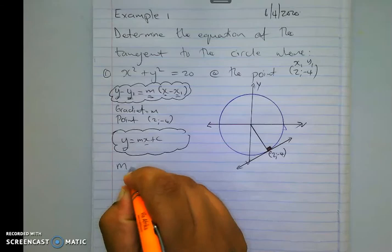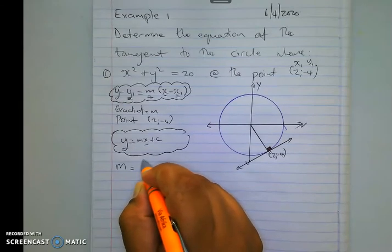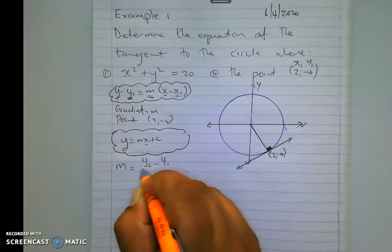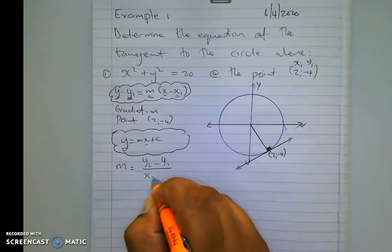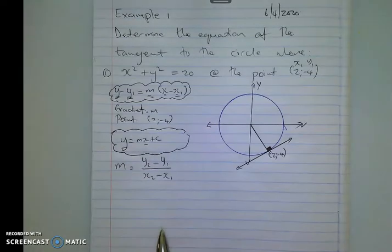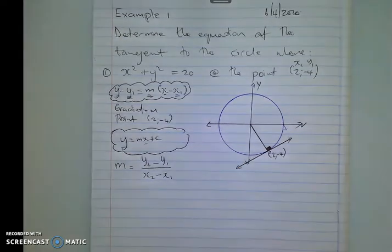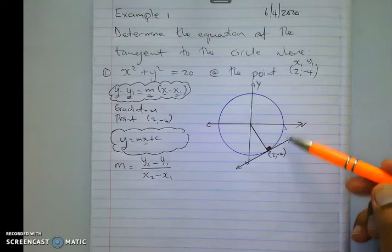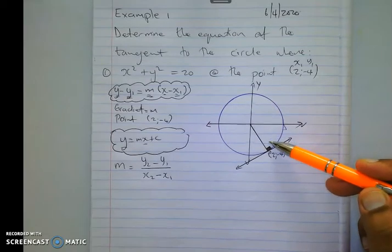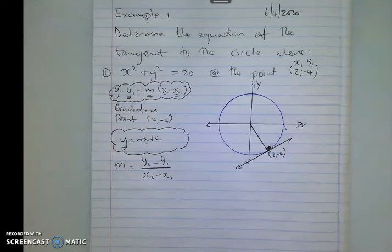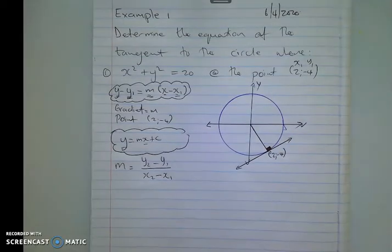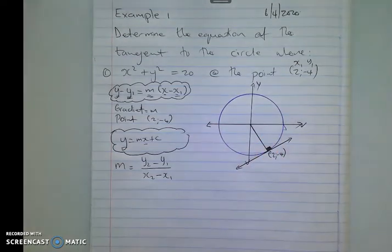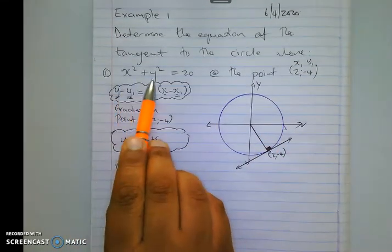So your gradient learners is m equals y₂ minus y₁ over x₂ minus x₁. So basically, I'm going to need two coordinates. They only give me one coordinate on the image, on the illustration. So where is the other coordinate? How do I know where my other coordinate lies? What if they didn't give me this image? How would I know?